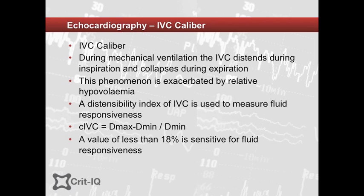With echocardiography, there are numerous variables available, but one relatively simple bedside test is the IVC calibre. IVC calibre is affected by respiratory state, with the IVC collapsing during mechanical expiration and distending with inspiration — this is exacerbated by relative hypovolemia. The greater the collapse during expiration, the greater the degree of fluid depletion. A distensibility index of IVC can be used to measure fluid responsiveness, given by the formula (Dmax − Dmin) / Dmin, with a threshold value of approximately 18%.